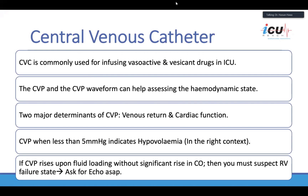The other tool we have is the central venous catheter. We use it quite often for vasoactive drugs and vesicant drugs. The CVP is quite reliable when it's low. CVP relies on venous return and cardiac function. One way of utilizing CVP: if we see CVP going up with a drop in cardiac output, that usually indicates the patient is going into right ventricular failure.